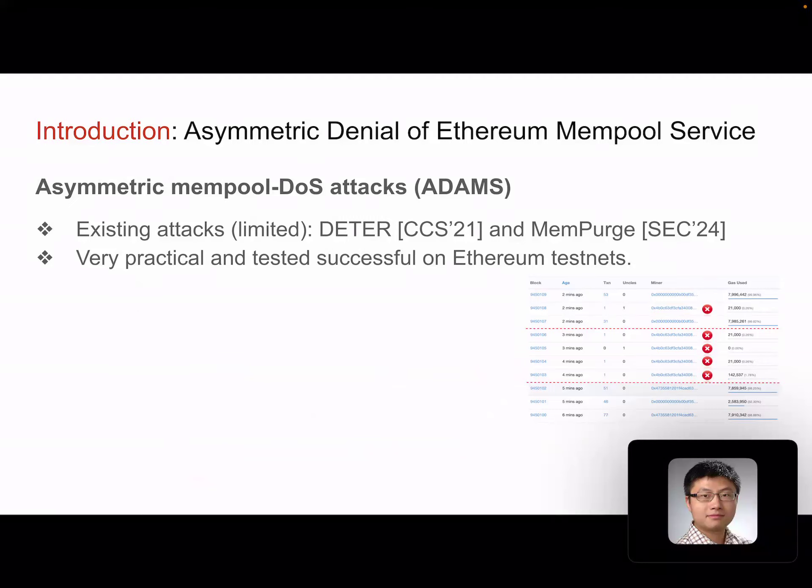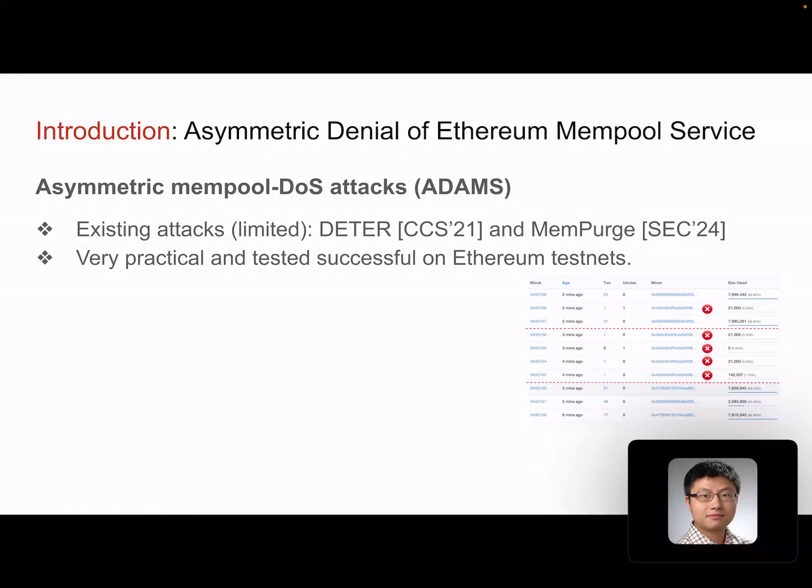In the existing literature, there is some research on constructing memory pool DOS attacks. One particular kind of DOS attack is asymmetric DOS, which means the attack cost is much lower than the victim's. There is a paper published three years ago at CCS, and there is also a recent paper accepted to appear at Usenix Security on memory purge. They are all asymmetric memory pool DOS attacks, very practical and also tested quite successfully on Ethereum testnet. The screenshot here shows one of the evaluation results from some of the testnet.